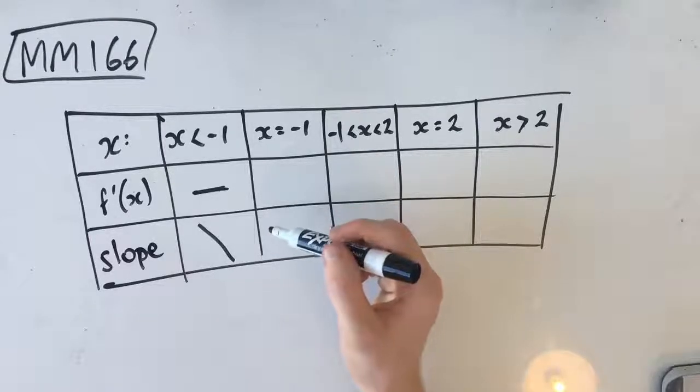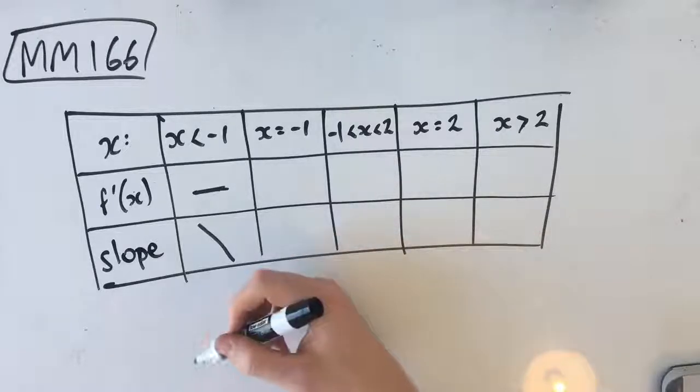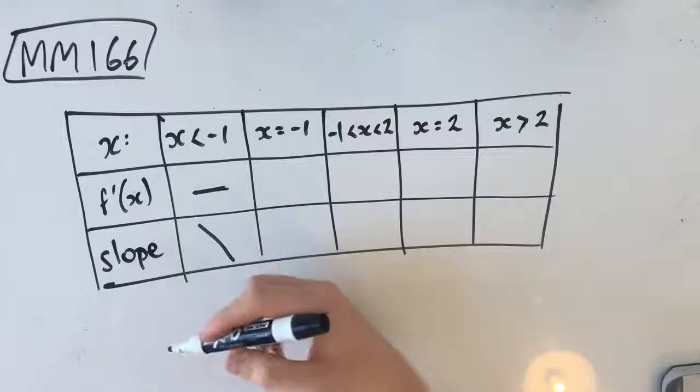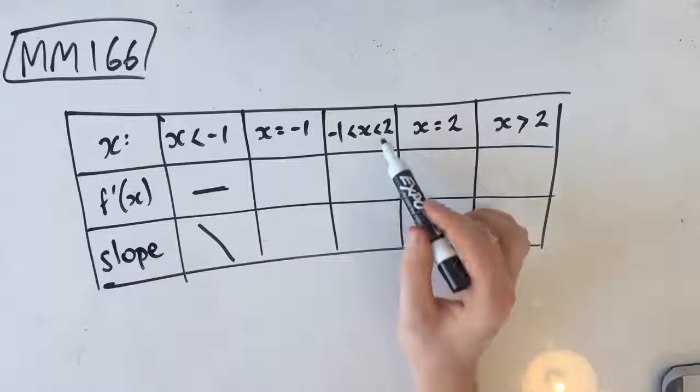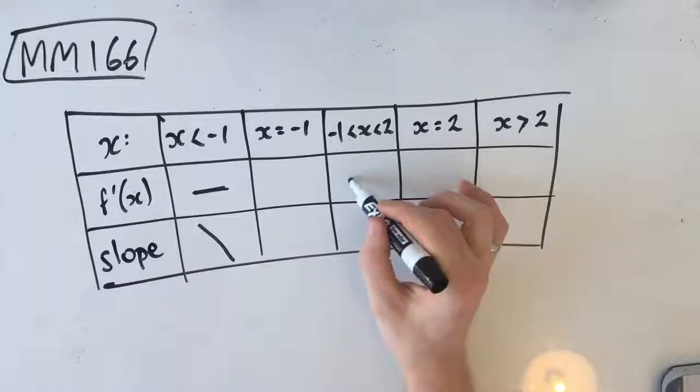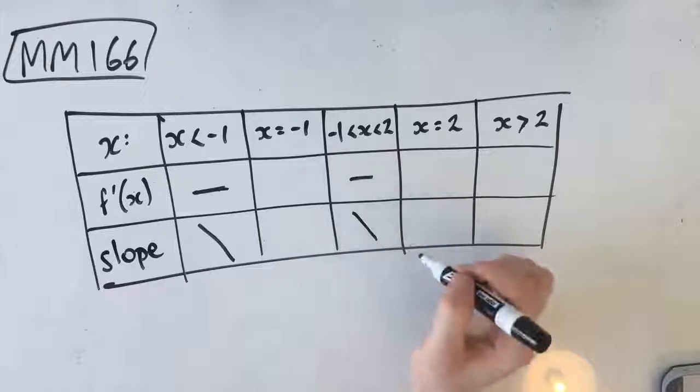The next condition says that f dash of x is less than 0 where x is between negative 1 and 2. So again, f dash of x is less than 0, which means that it's negative for x is between negative 1 and 2. So negative, which again, goes down.